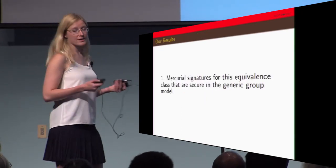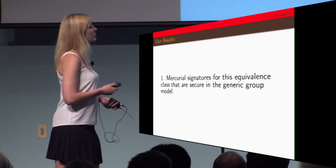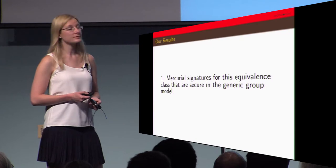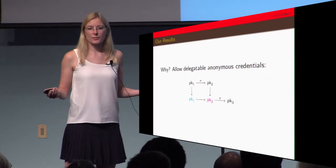We have two main results. First, we were able to realize Mercurial signatures and prove them secure in the generic group model. Why do we care about this?